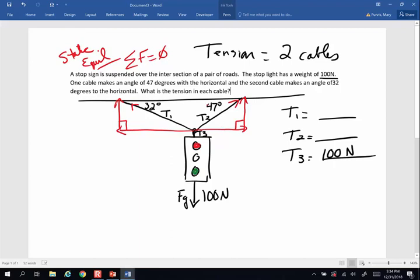Now because of the mathematical rule of alternate interior angles, if this is 32, this is 32, and if this is 47, this is 47.